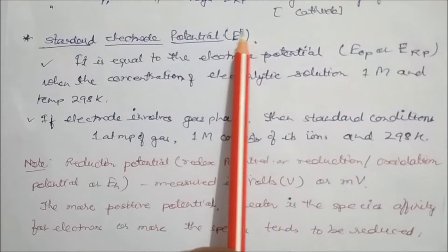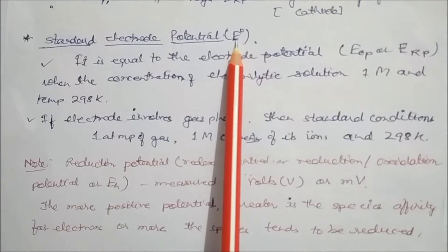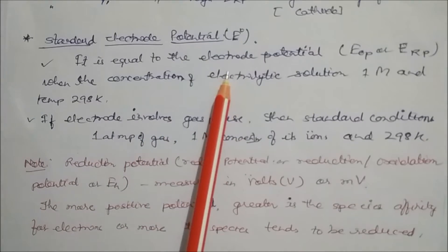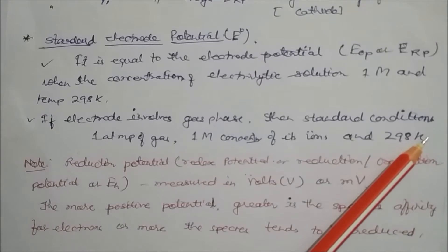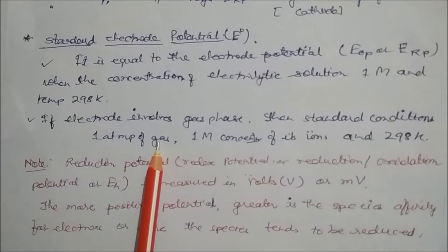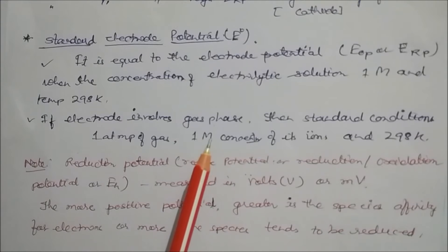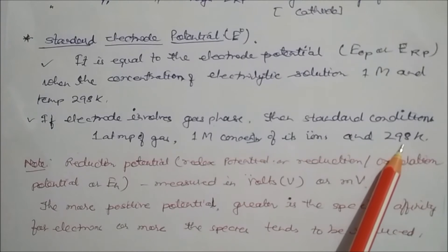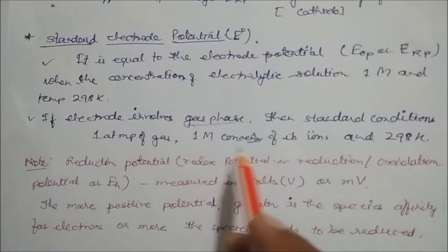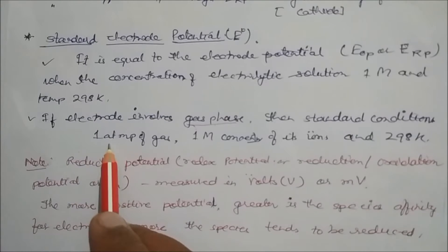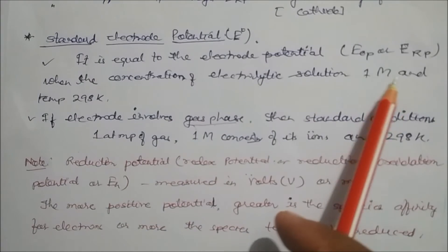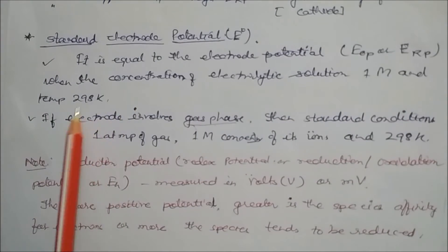If the electrode involves a gas phase, the standard condition is not one molarity but one atmospheric pressure of the gas. However, the concentration of its ion in solution remains one molar and the temperature remains 298 Kelvin. So for gas phase we write one atmospheric pressure, and for solution phase we use one molar concentration at 298 Kelvin.